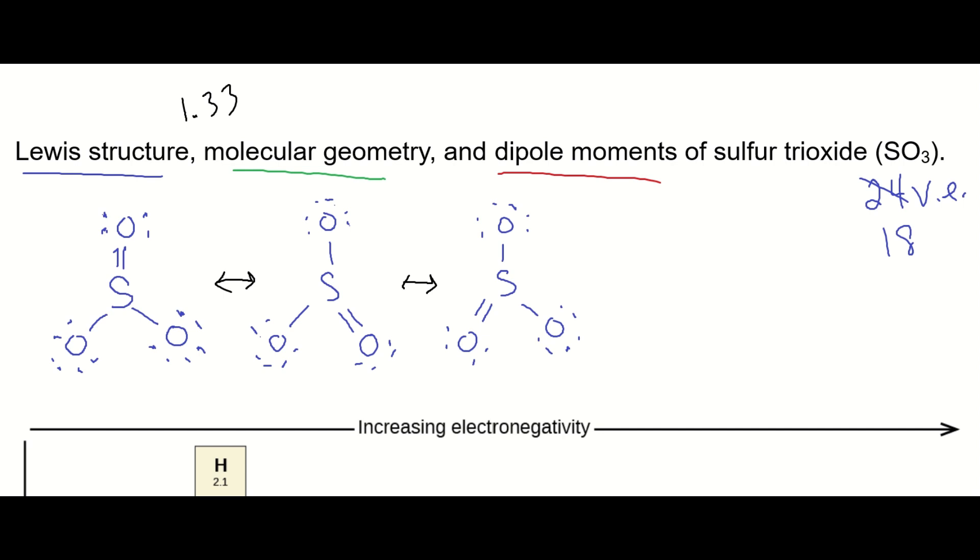Now, you may have considered the formal charge on this, and if you did, you'll notice that each of these oxygens that have a single bond to the sulfur have a formal charge of one negative, and then the sulfur in the center has a formal charge of plus two. So you may have considered moving another lone pair and making a double bond between each of the sulfurs and oxygens, and then you'll get this Lewis structure.